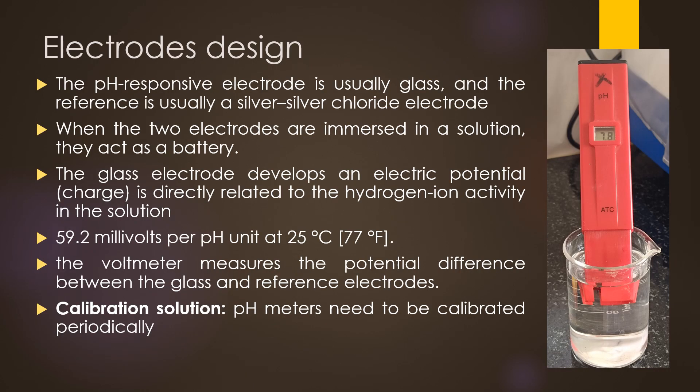The pH-responsive electrode is usually glass, and the reference electrode is made of silver or silver chloride. When both electrodes are immersed into a solution, they act as a battery. The glass electrode develops an electric potential when dipped into the test solution, directly related to the hydrogen ion activity. As pH readings rely on temperature, it is advised to compensate for temperature if samples are not at 25°C. At this temperature, the pH meter produces 59.2 millivolts per pH unit. The voltmeter measures the potential difference between the glass and reference electrodes. A calibration solution helps calibrate the pH meter periodically to ensure accurate readings.